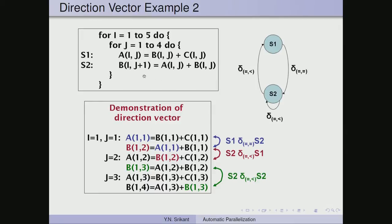A different example with two levels of nesting: i and j are the two loops. We have S1: a[i][j] = b[i][j] + c[i][j] and S2: b[i][j+1] = a[i][j] + b[i][j]. Expanding for i=1, j=1 we get a[1][1] = b[1][1] + c[1] and b[1][2] = a[1][1] + b[1][1]. There is a flow dependence from S1 to S2 — both i and j iterations are the same — so S1 delta S2 with both directions equal to.